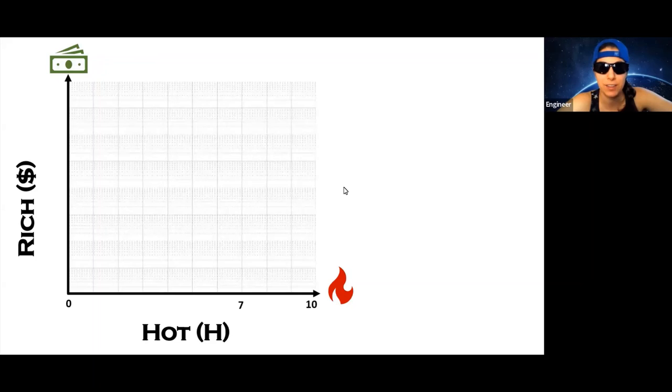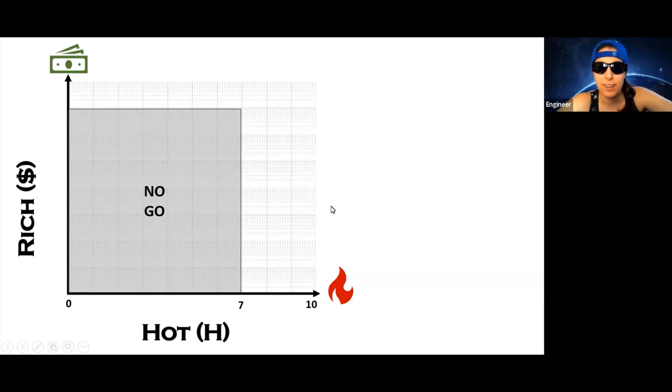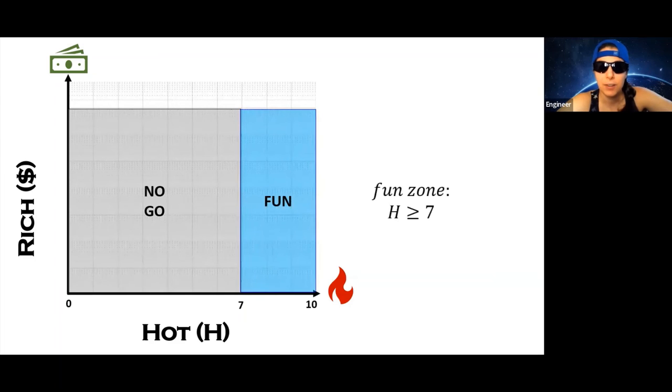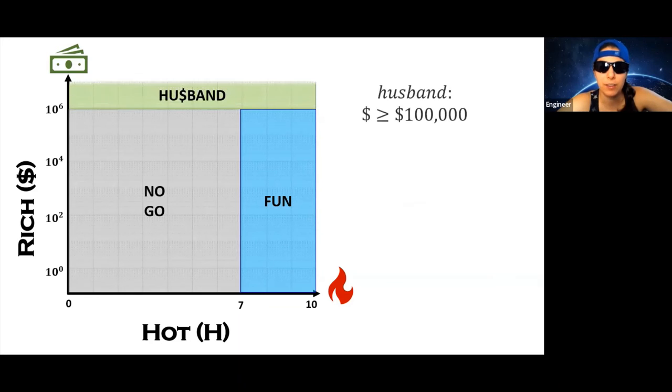Now let's move on to the male matrix. This is much simpler than the female matrix. The hot axis once again goes from zero to ten, but note that the vertical monetary axis is based on a log scale because it involves exponential numbers. Women have a very large no-go zone, but beyond about a seven hot is the fun zone. Here you can date, you can hang out, but whether or not things get more serious depends on your income. Above about a six figure starting salary is the husband zone. Beyond this point, appearances are irrelevant, and you might find yourself in a beauty and the beast scenario.